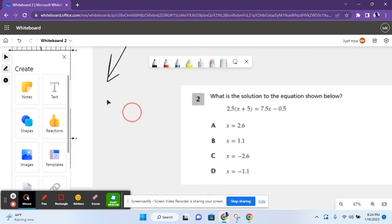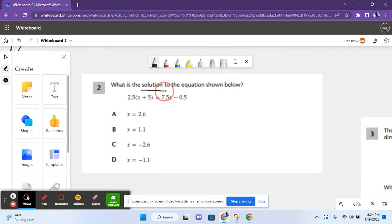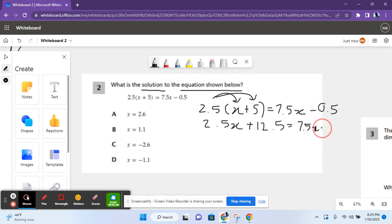Let's move on to the next question. For number two, it says what is the solution to the equation shown below. So for this you have to do 2.5x plus 5 equals 7.5x minus 0.5. First you have to distribute 2.5 to 5. So you do 2.5x plus 12.5 and that equals 7.5x minus 0.5.